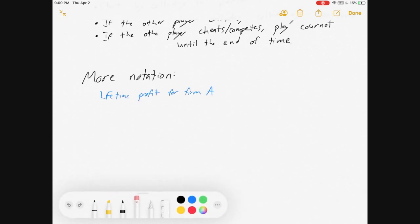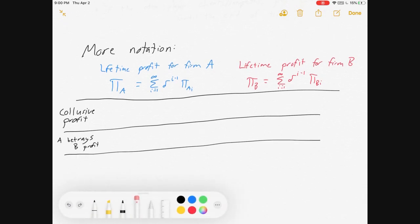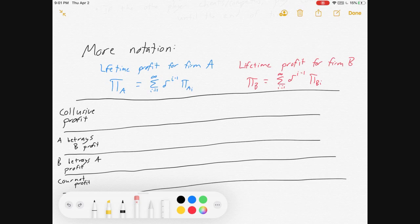So we need more notation. Let's get to it. Lifetime profit for firm A, pi A, is equal to the sum i equals one to infinity, times that, discounted profits in each period. Lifetime profit for firm B is basically the same thing, but with a B on it.